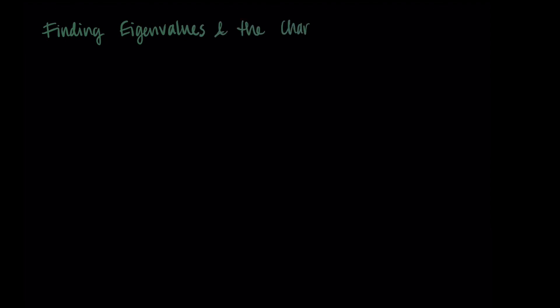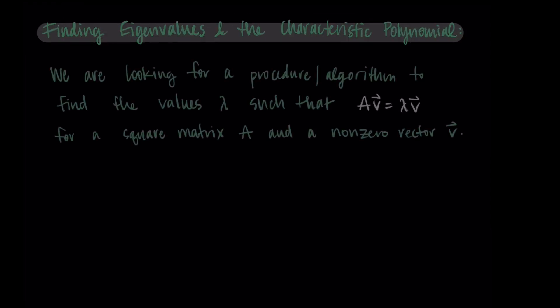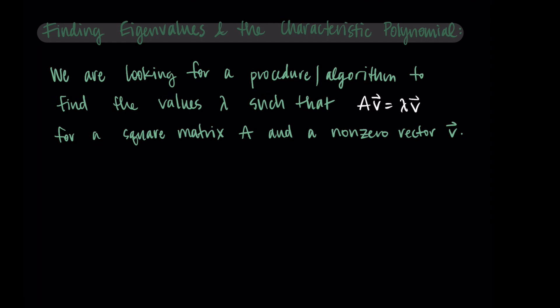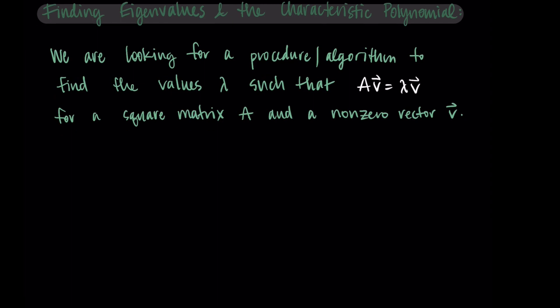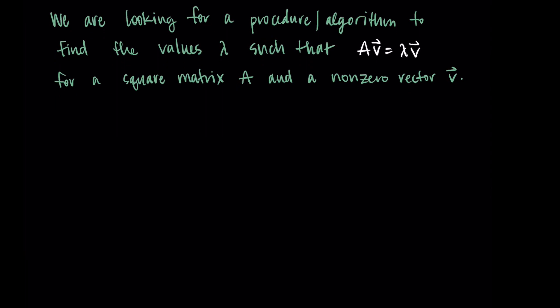Hi and welcome. In this video we're going to start talking about how we find eigenvalues and how this relates to something called the characteristic polynomial. Our goal is to find a procedure or algorithm that will help us find the special values lambda — our eigenvalues — that have this property: A times V equals lambda times V. This is for the specific case where we have a square matrix A and a non-zero vector V.